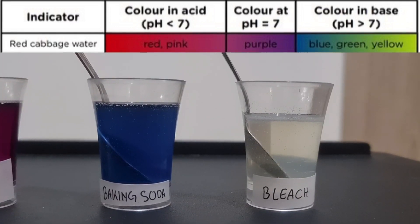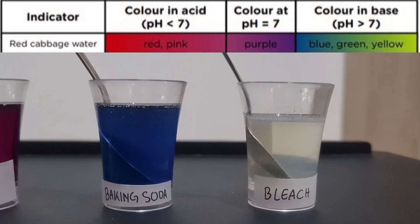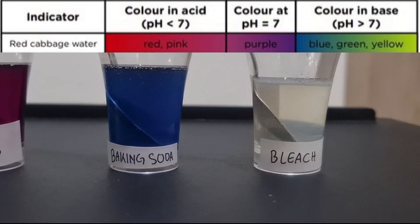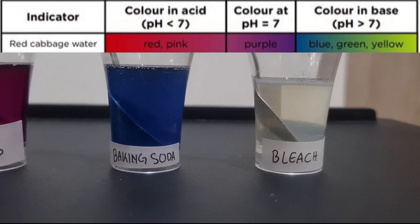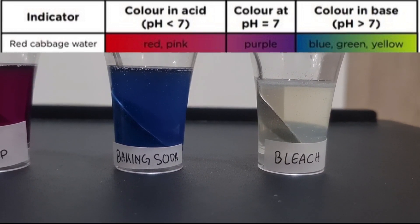For baking soda solution and bleach, the baking soda turned blue and the bleach turned slightly yellow, which means that both are also alkaline or base. If we compare it to the table, the bleach which turned yellow is a stronger base than baking soda that turned blue. That's all for the experiment of red cabbage as a natural acid and base indicator.